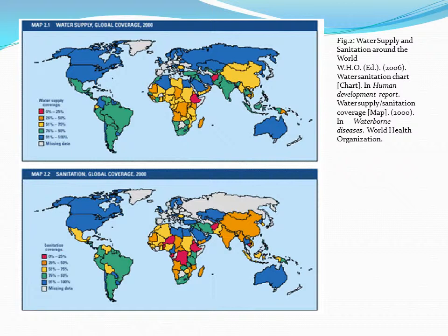In the first half of this graph, it shows the percentage of people of each country that are able to access drinking water. The second half of the map shows what percentage of people of that country have access to clean drinking water. Figure 2 shows that nearly all African countries have access to water 50% of the time or less, and of the water they have access to, less than 50% of that is actually safe to drink.